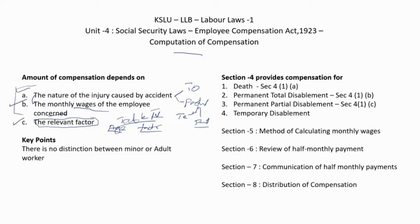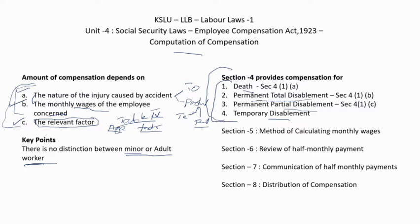There is no distinction between a minor and an adult worker — compensation depends only on these three factors. Section 4 of the Employees Compensation Act provides compensation for four situations: death of an employee (Section 4(1)(a)), permanent total disablement (Section 4(1)(b)), permanent partial disablement (Section 4(1)(c)), and temporary disablement.